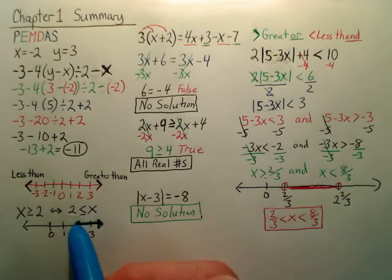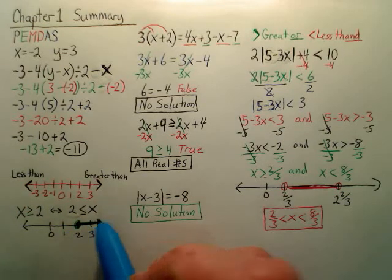Here's the picture of it. X is solid, because it's or equal to. And it's shaded to the greater side. Basically, follow the arrow.